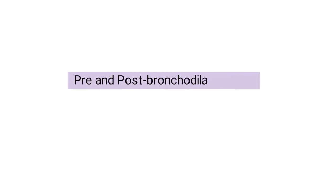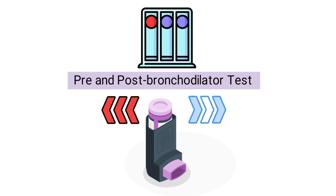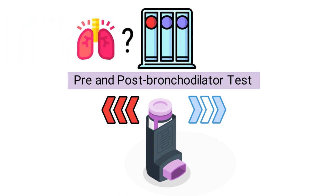A pre and post bronchodilator test involves administering a bronchodilator before and after spirometry is performed. The results of the test help show how the patient's lungs respond to the medication. By comparing the pre and post results, we can determine if the medication has effectively improved the patient's lung function, which tells us a lot about their condition.